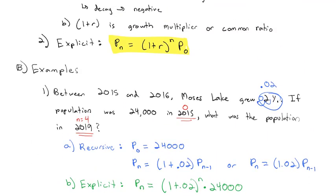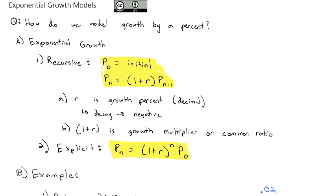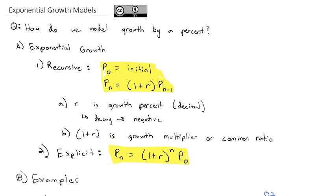This is our exponential growth. It's usually used when we're growing by a percent or decaying by a percent. We can represent it with a recursive formula or an explicit formula. Now it's your turn to try that on the homework and see how it goes. Let me know if you have any questions.